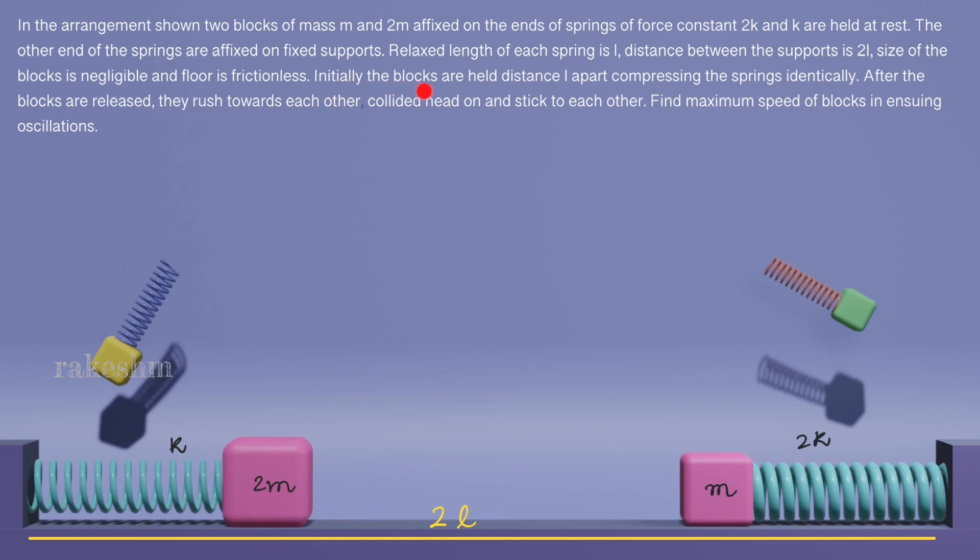Next, initially the blocks are held distance L apart compressing the springs identically. So initially the separation between the blocks is L and these two springs are compressed equally and the compression in them will be L by 2. After the blocks are released, they rush towards each other, collide head-on and stick to each other.